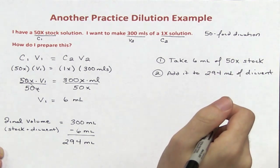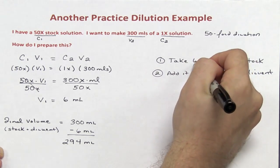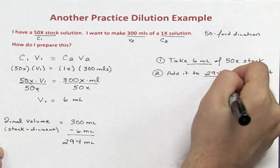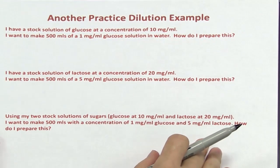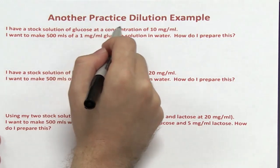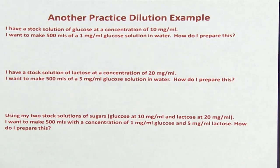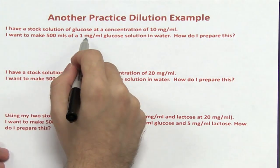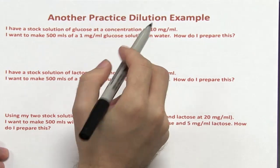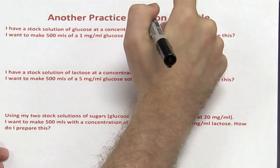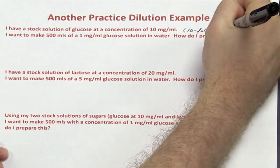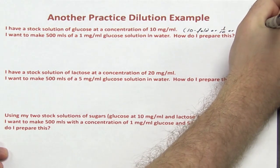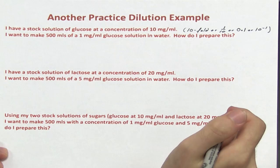When preparing solutions, remember to include the volume of stock that you need as well as the amount of diluent. Let's look at one more problem broken into three parts. First: I have a stock solution of glucose at 10 mg per mL, and I want to make 500 mL of a 1 mg per mL glucose solution. That's a 10-fold, or 1-to-10, or 0.1, or 10 to the minus 1 dilution.